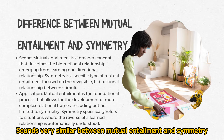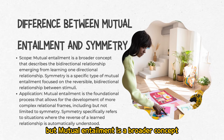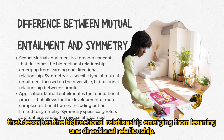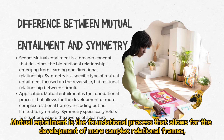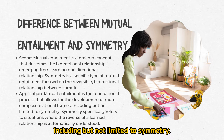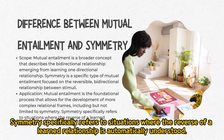It sounds very similar between mutual entailment and symmetry. But mutual entailment is a broader concept that describes the bidirectional relationship emerging from learning a one-directional relationship. Symmetry is a specific type of mutual entailment focused on the reversible, bidirectional relationship between stimuli. Mutual entailment is the foundational process that allows for the development of more complex relational frames, including but not limited to symmetry. Symmetry specifically refers to situations where the reverse of a learned relationship is automatically understood.